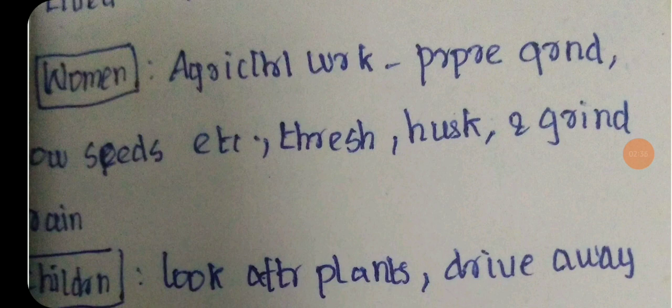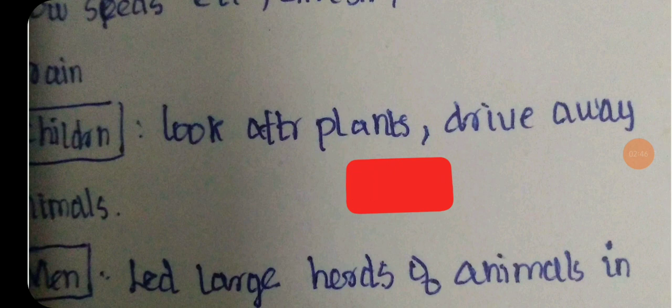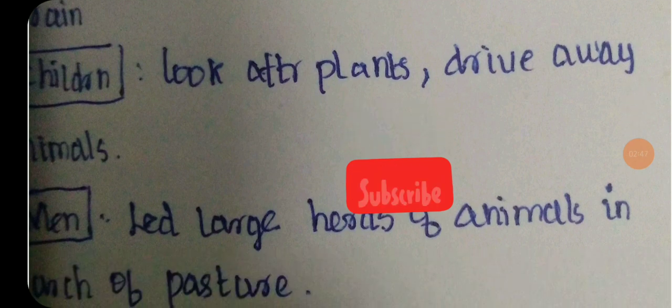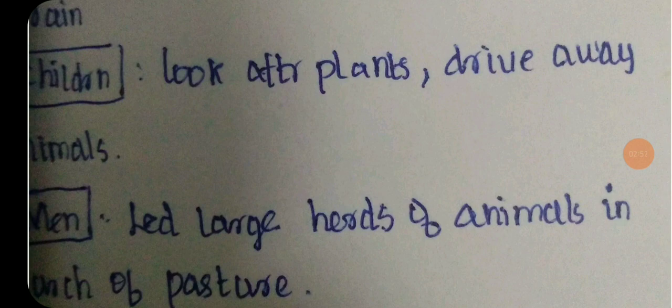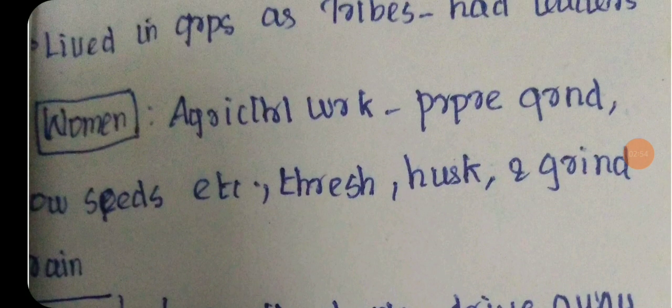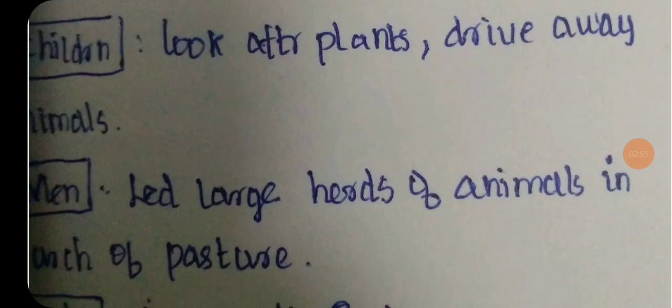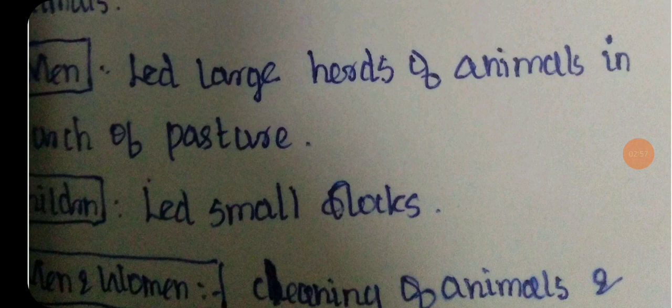Women are doing agriculture. They are preparing food, preparing the ground, preparing seeds. Children are doing plants. They are making plants.